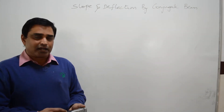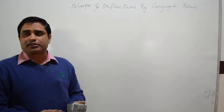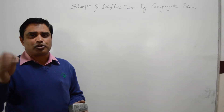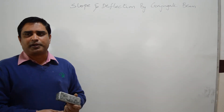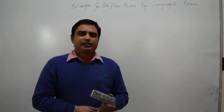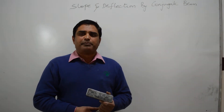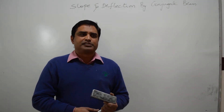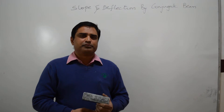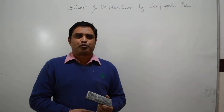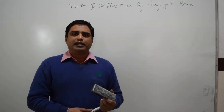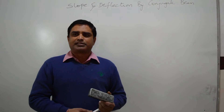In the moment-area theorem, it is very difficult — and in fact not possible — to calculate slope and deflection for beams with varying flexural rigidity. The conjugate beam method is the modified form of the moment-area theorem, and it was proposed by Mohr in 1868.